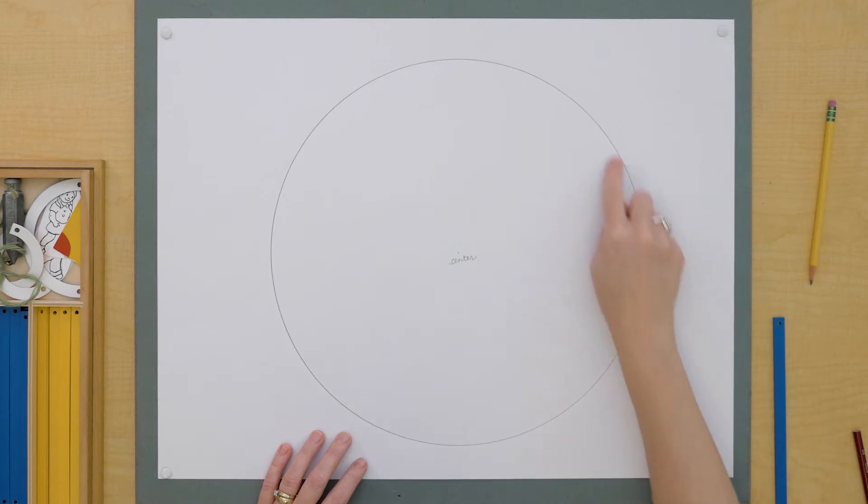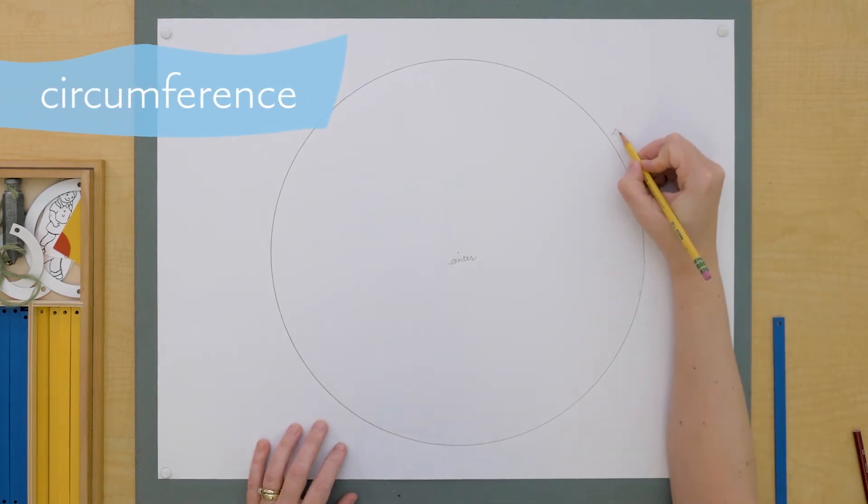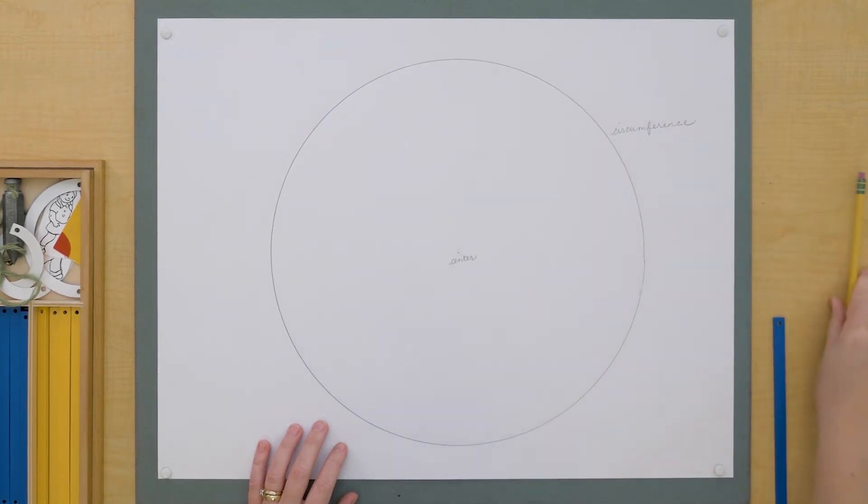And this line that I drew, the outer boundary of the circle, is called its circumference. So we've got a circumference, that outer boundary, and we've got a center.